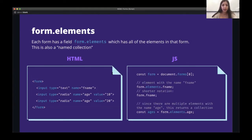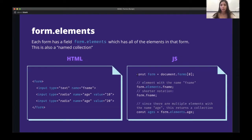The form also has two radio input buttons which both have the same name 'age' but two different values. Over on the right-hand side we have some JavaScript. First we retrieve the form element via document.forms, getting the zeroth form. To retrieve what the user has typed in for fname, we do form.elements.fname. Doing form.elements[0] to get the zeroth element is also valid. There's also a nice shorthand notation where you can do form.fname directly — you don't need to always type .elements.